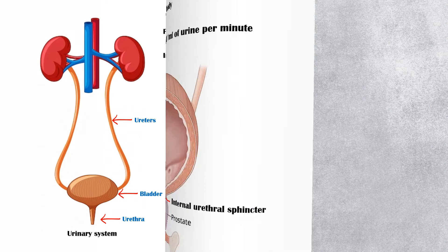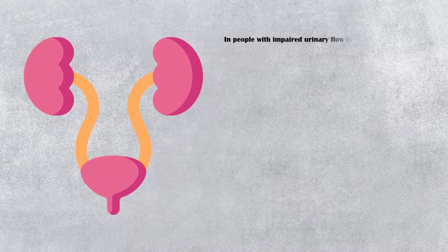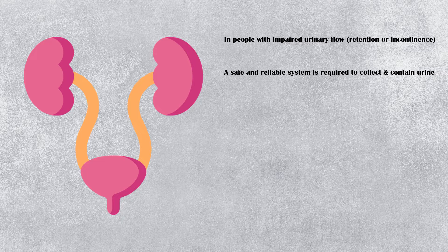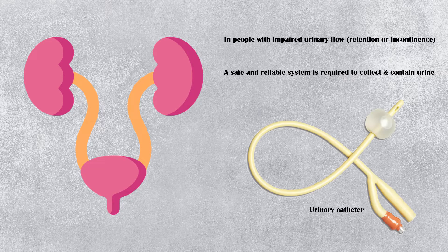In people with impaired urinary flow, either due to retention or incontinence, a safe and reliable system is required to collect and contain urine. This is where the urinary catheter comes into play.